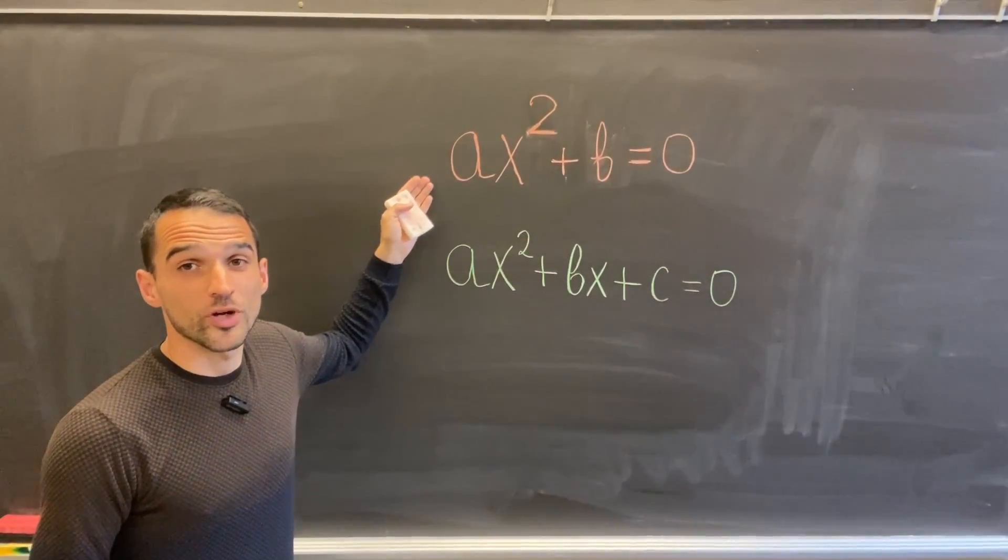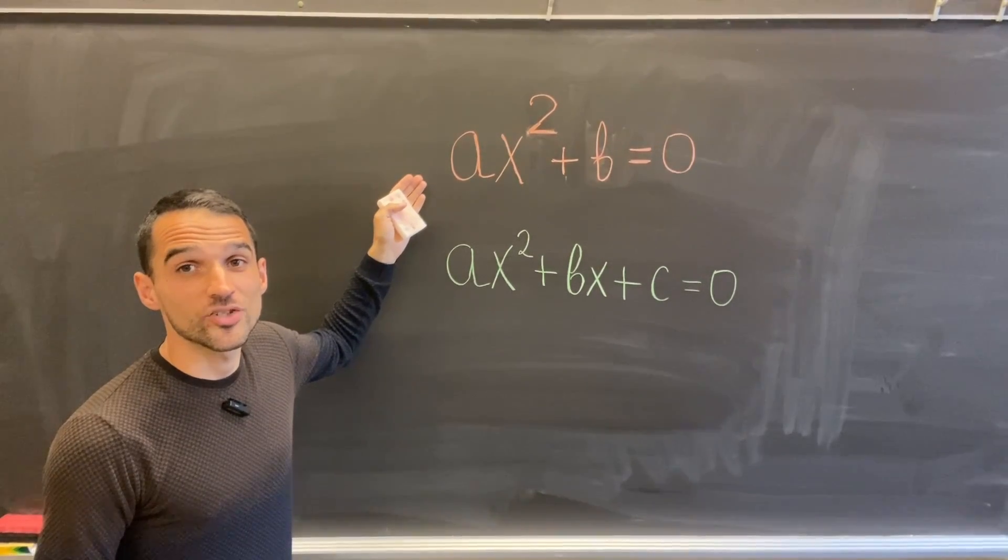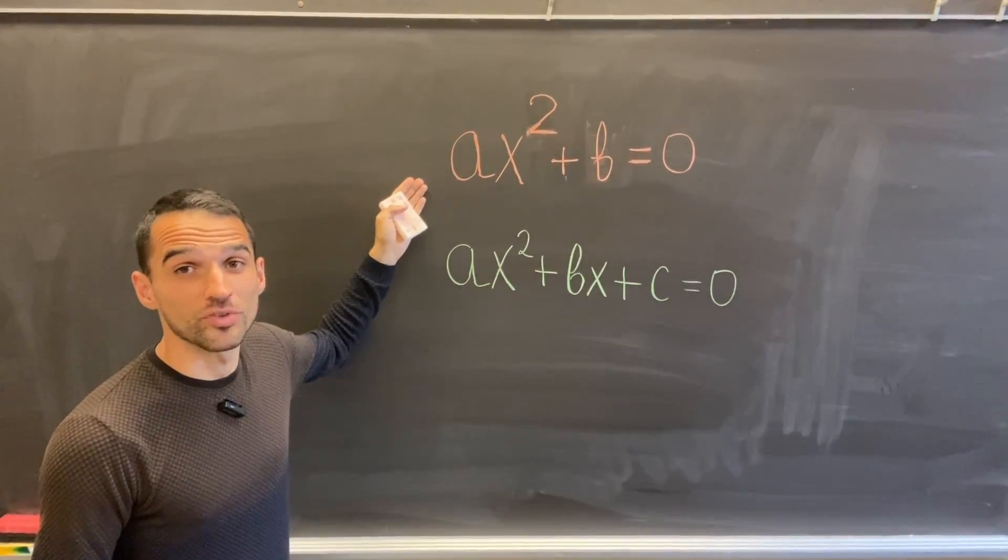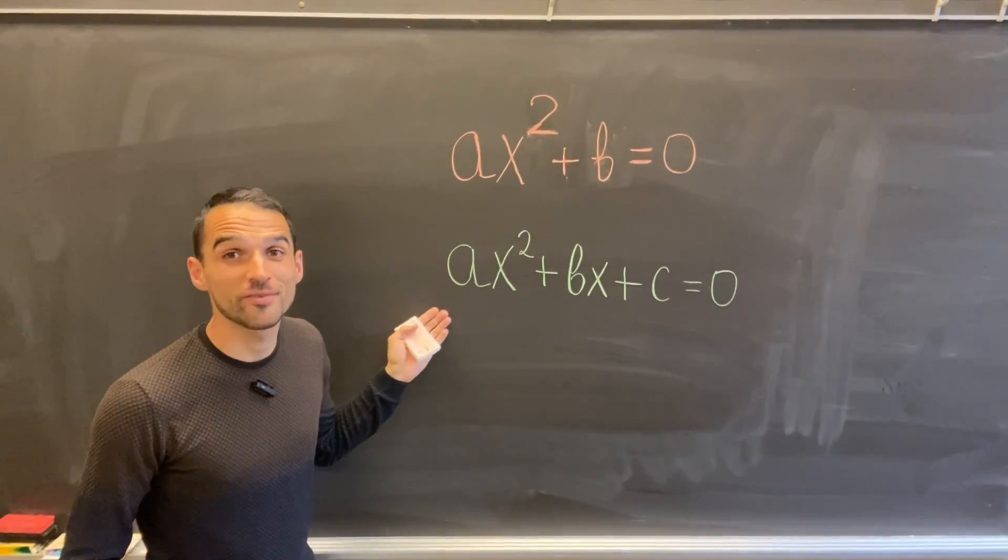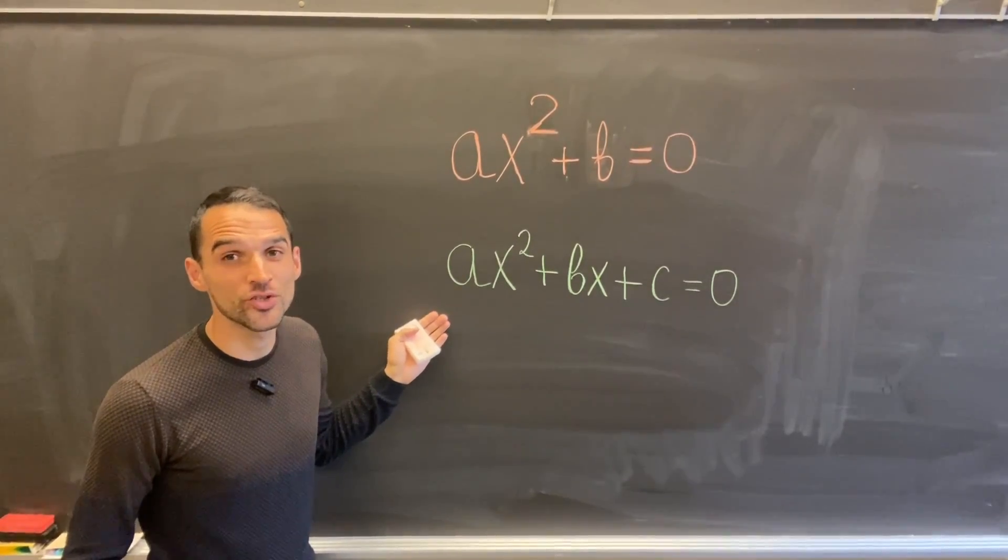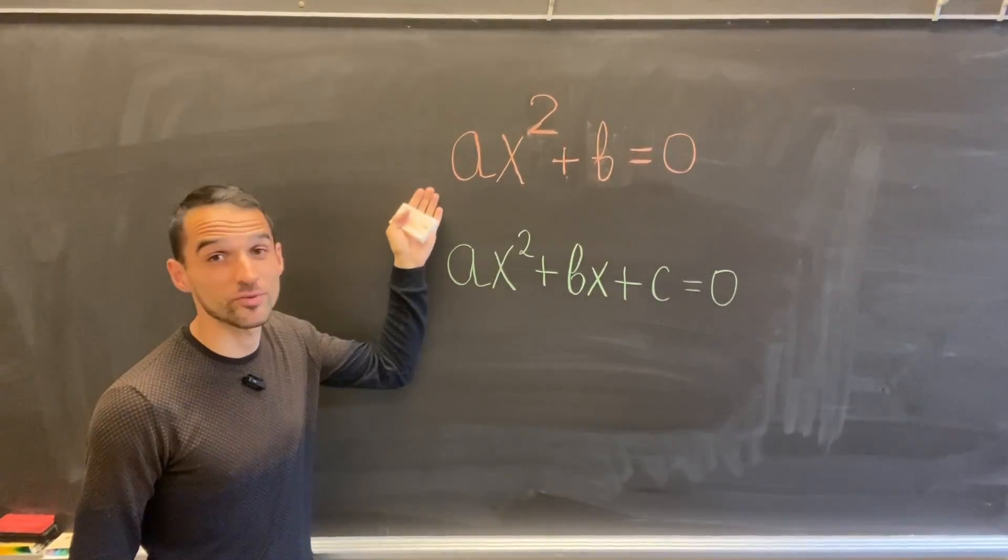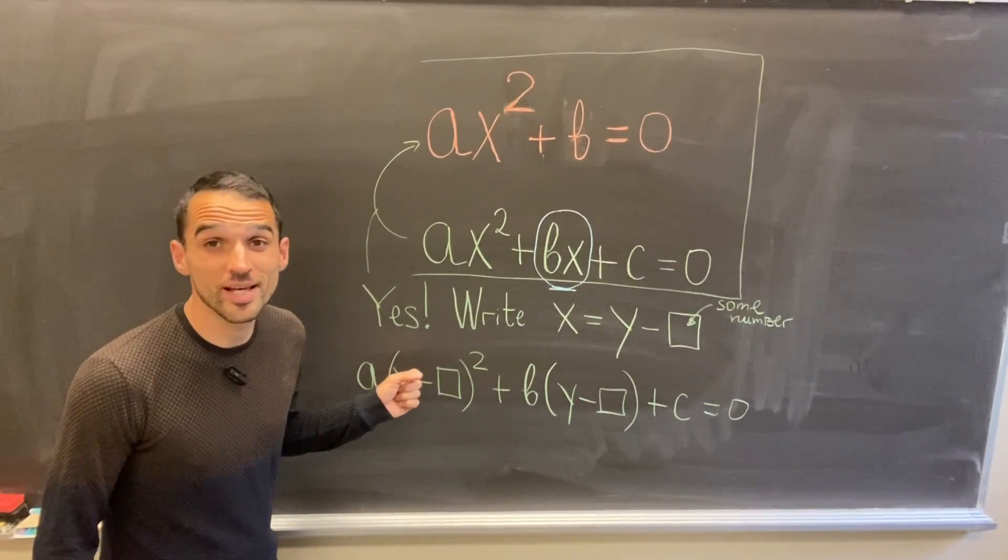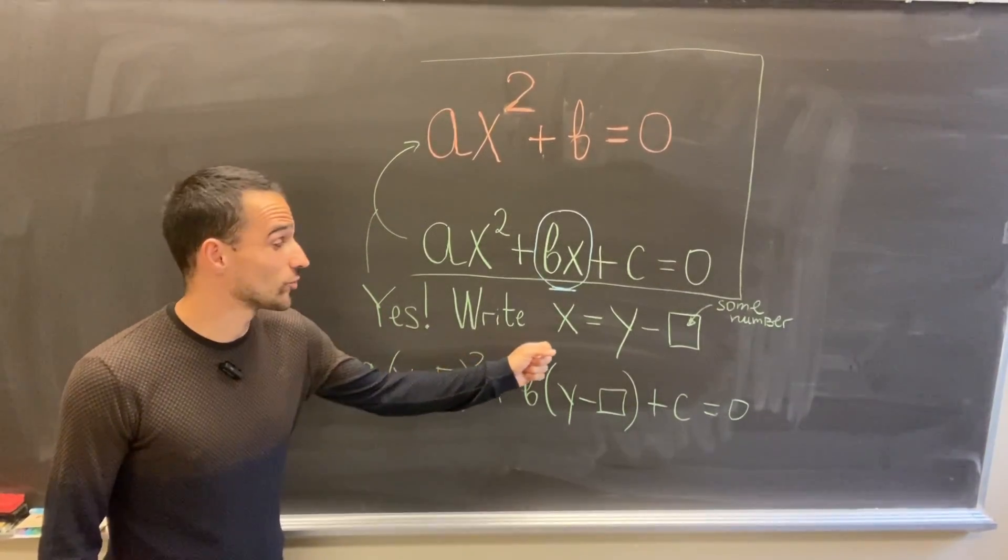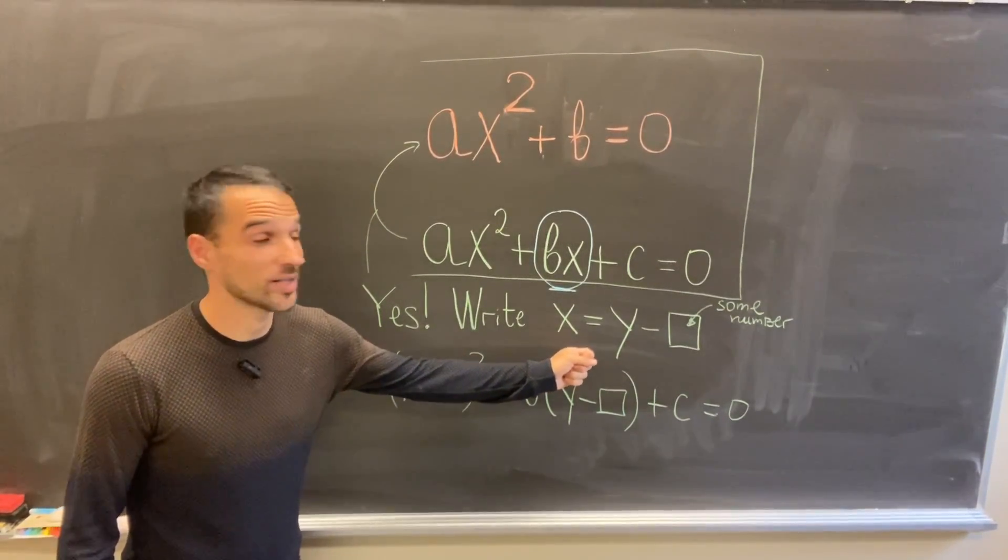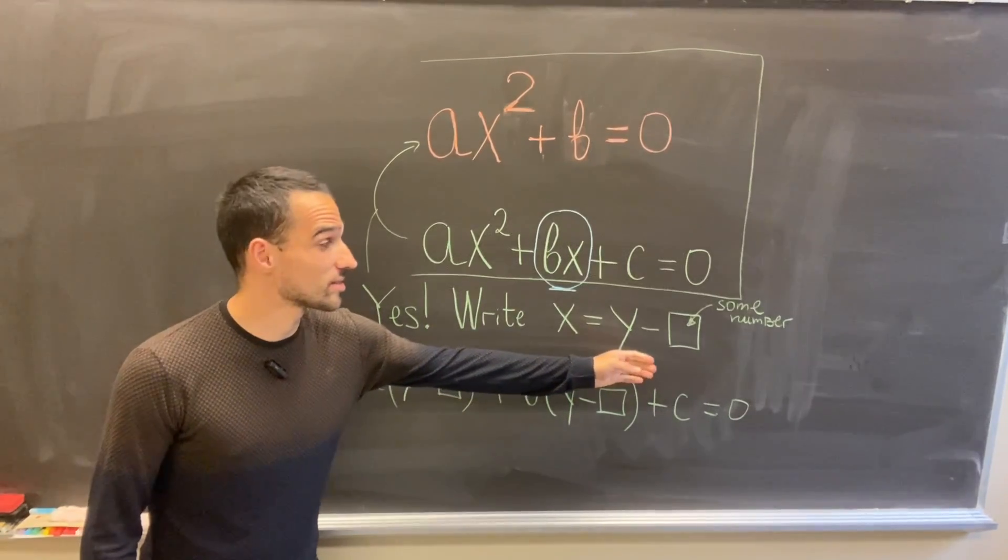Now the question is: if I have my standard quadratic equation, can I convert it to a depressed quadratic? The answer is yes, and the idea is to replace x with some other variable y minus some number selected carefully so that this linear term goes away.